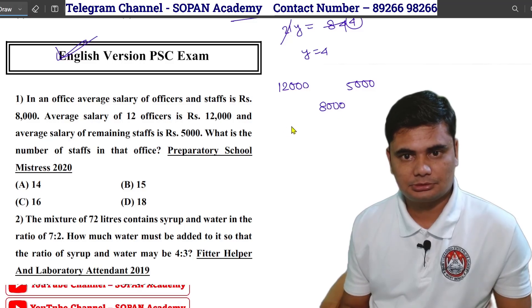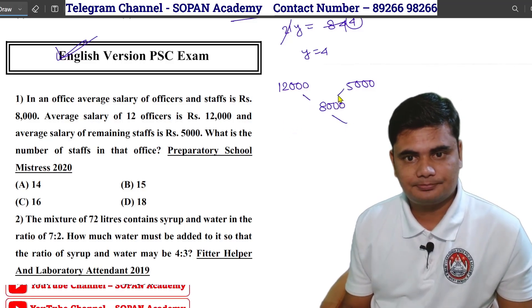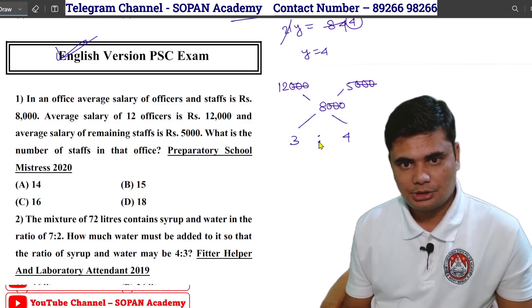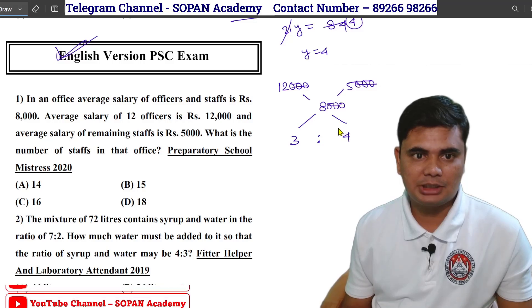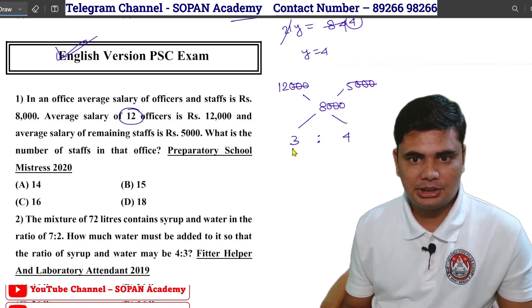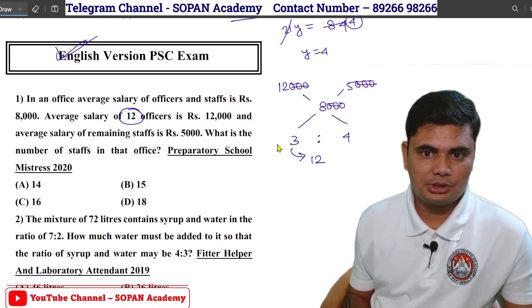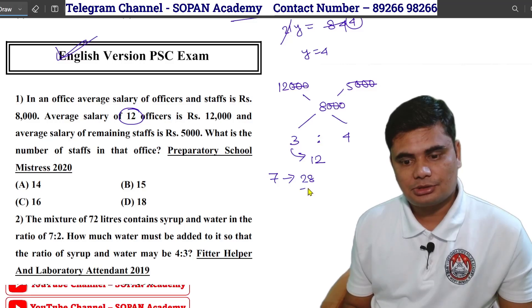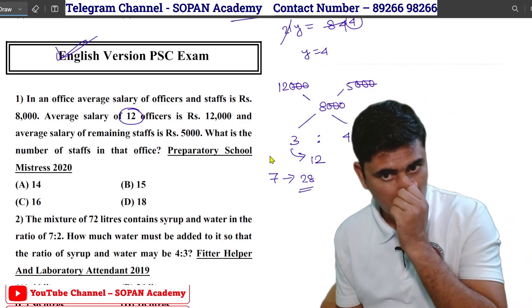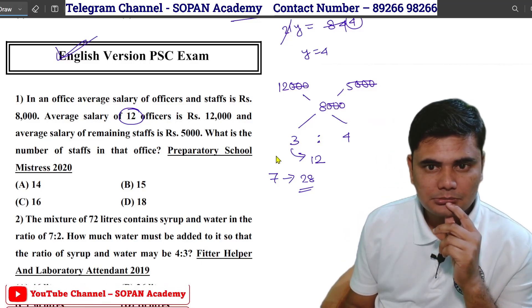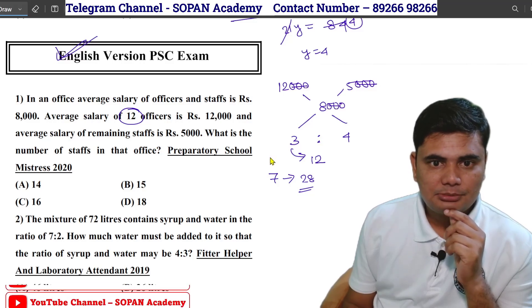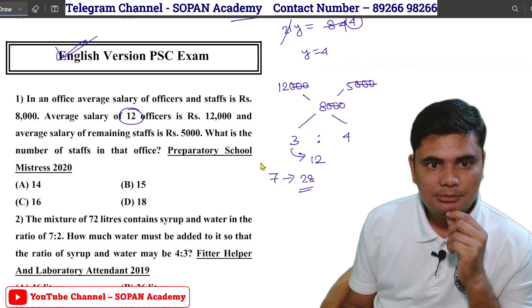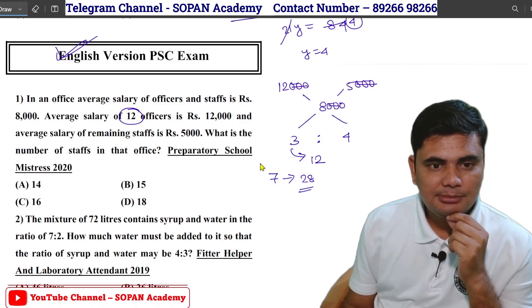So this is the official salary. This will look like the number — what is the number of staff in that office?